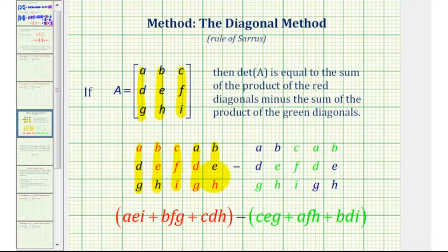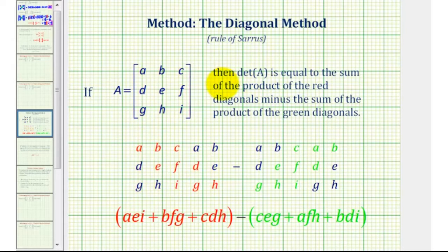So once we have the three by five arrangement of elements, we're ready to use the diagonal method to find the value of the three by three determinant. The determinant of matrix A is equal to the sum of the product of the red diagonals minus the sum of the product of the green diagonals.